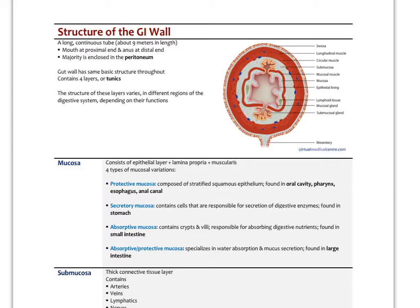The gut is a continuous tube about nine meters in length, a little bit longer in a cadaver because it's not all puckered up with smooth muscle. The mouth is at the proximal end, the anus at the distal end. The majority of it is enclosed in peritoneum. There are four basic layers called tunics throughout, and their structure is going to vary in different regions — the stomach has extra muscle, and the mucosa folding in the small intestine is very different from other areas.